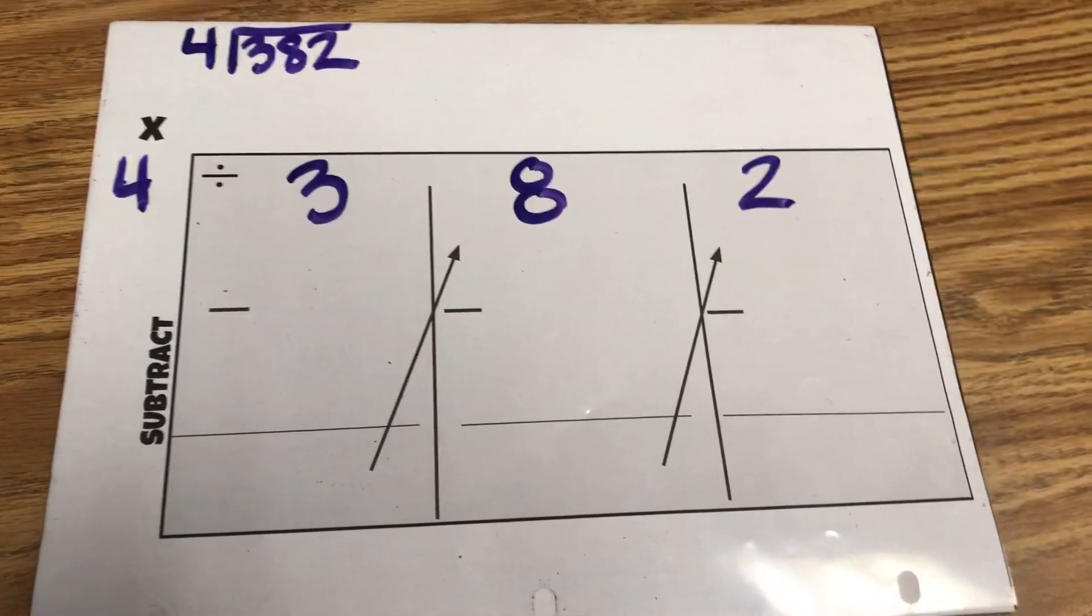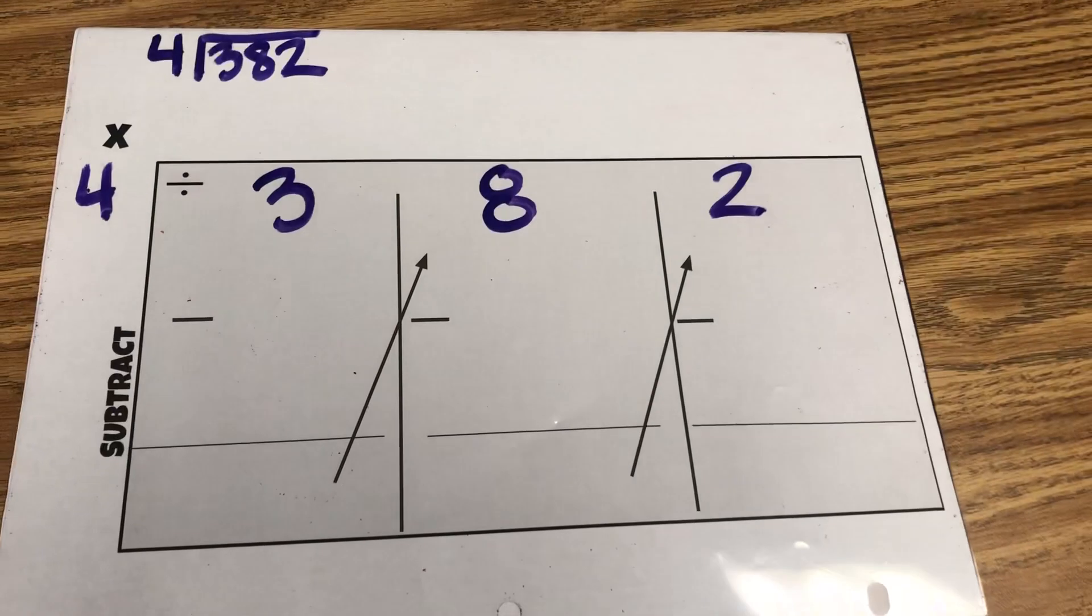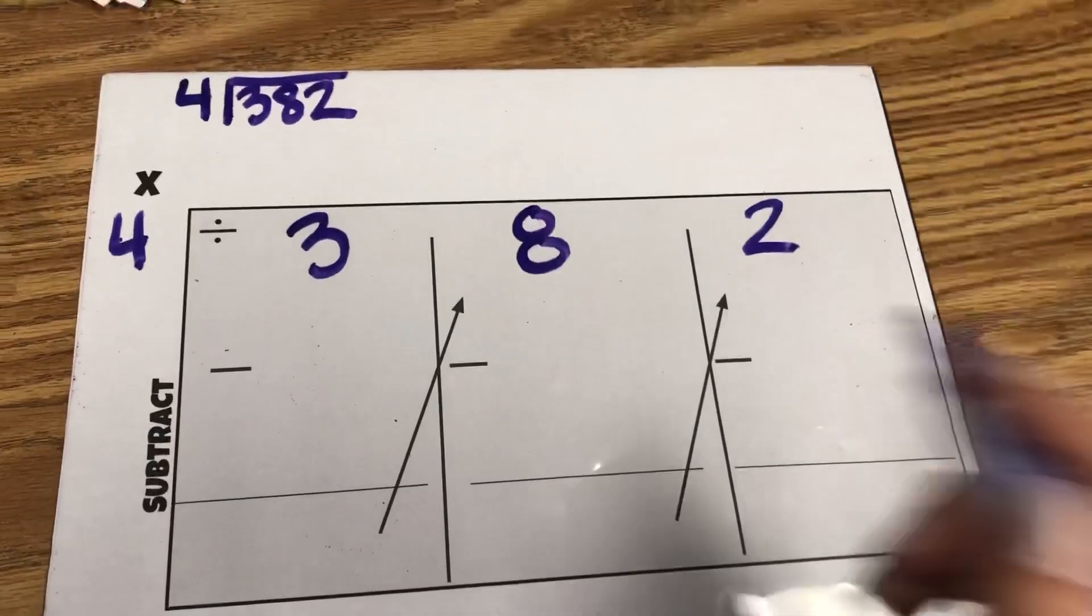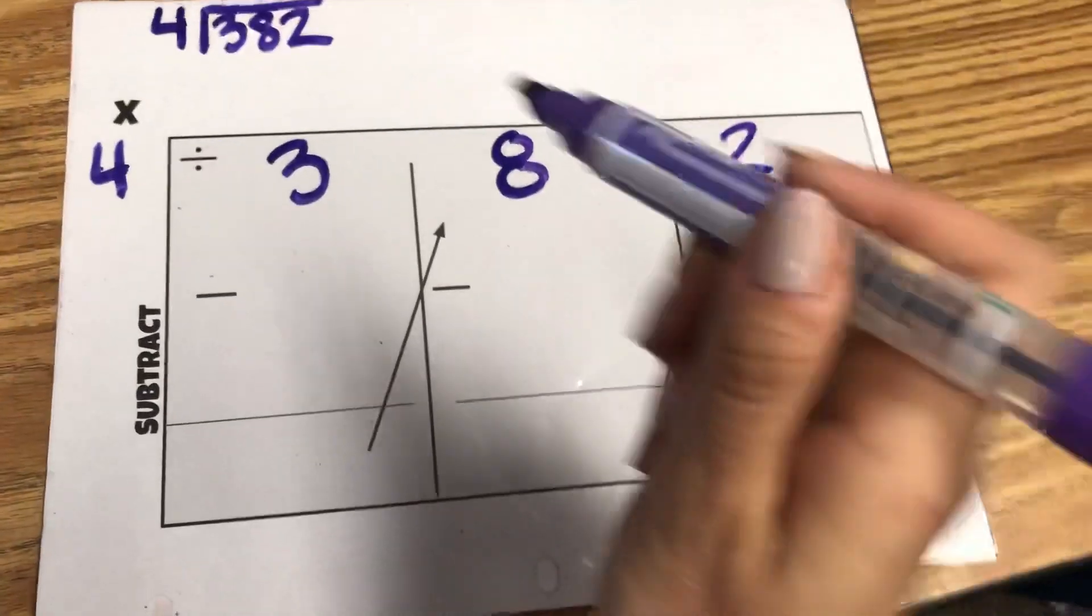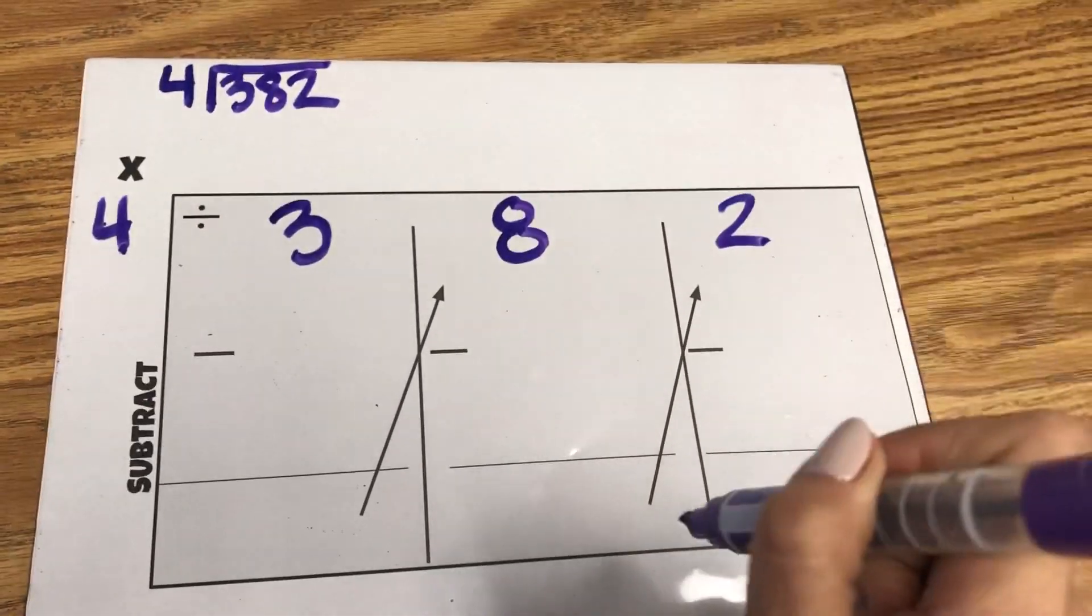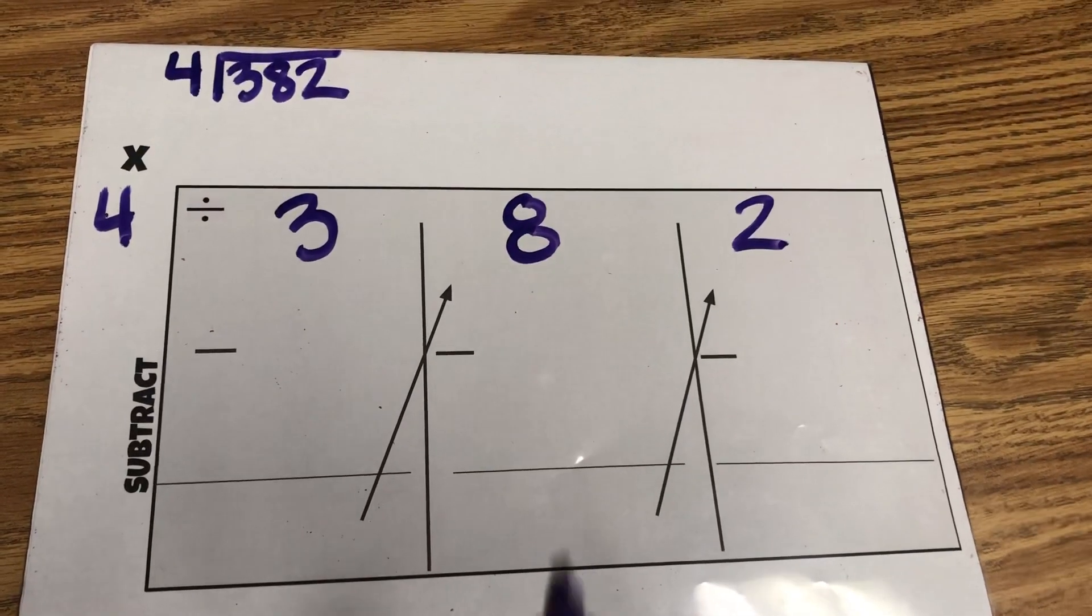Today we learned how to do long division, and one of the methods I show the kids is how to use boxes instead. The steps are the same, it just helps them line up their numbers a little bit easier and they're not bringing a number down. So let me show you for the homework tonight.